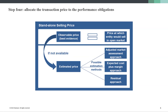The last approach is the residual approach, very similar to the old ASC 605 method. If you have two products or goods and services and you know the standalone price of one, and you know the total price of the bundle, you can use straightforward math: total price less the known standalone price equals the residual amount, which you can use as your estimate.